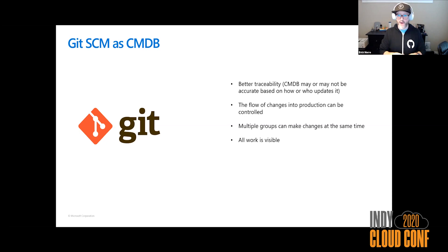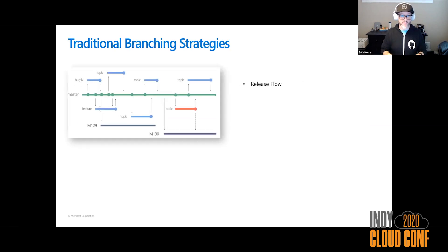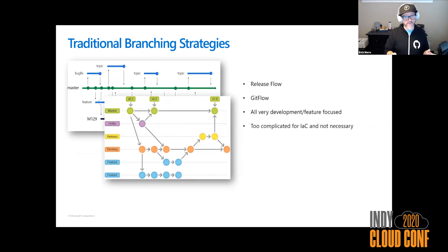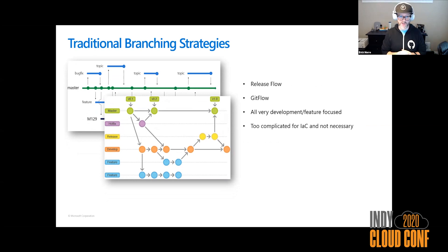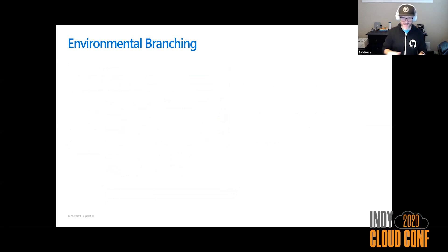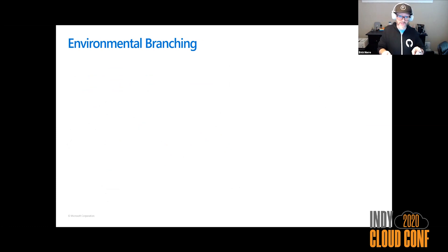The other benefits of Git: multiple groups working at the same time, and again, making our work visible. Traditional branching strategies like release flow and Git flow are really too complicated for an infrastructure person — they're solving different problems that come up in a traditional development environment and are really not necessary for infrastructure as code. The method I like to do — and you can do whatever you want, don't say Eric said I have to do this — is an environmental branching strategy.